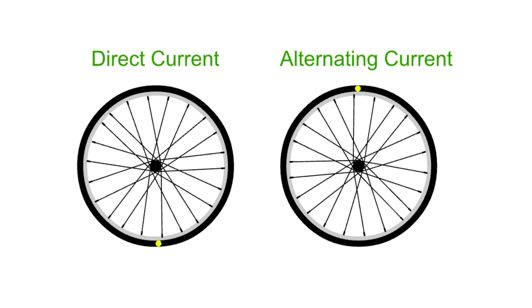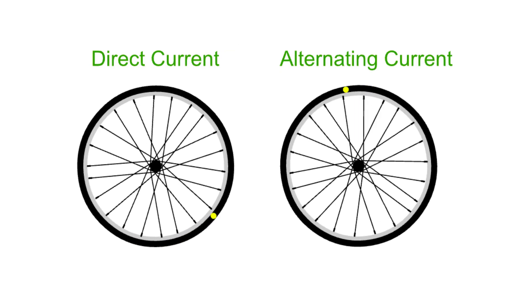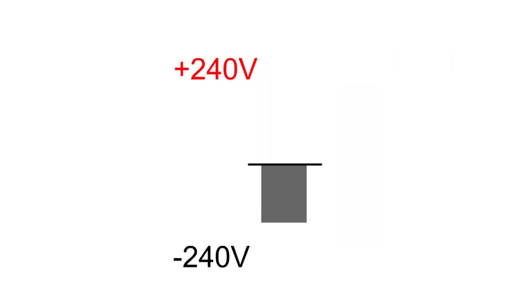With DC the direction of the current doesn't change. An AC current changes direction because the voltage is constantly changing between positive and negative 50 times a second. We say that the frequency is 50 Hertz.